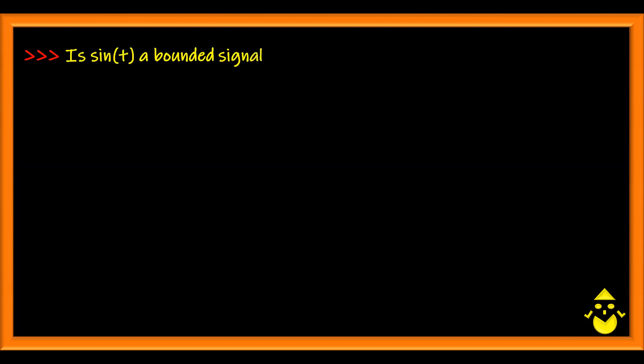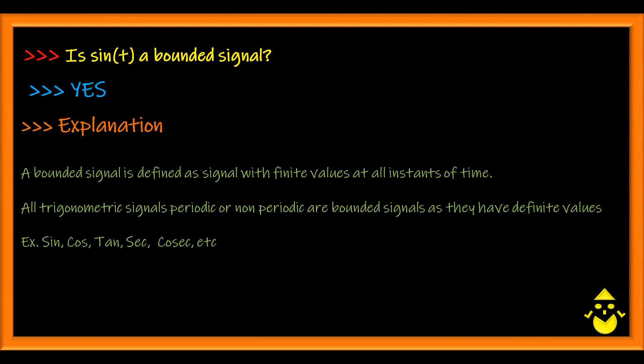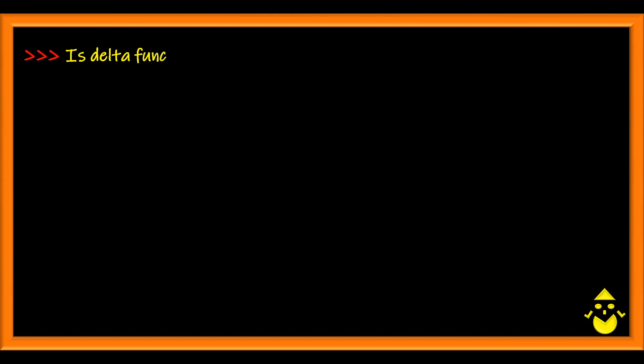Is sine t a bounded signal? Yes. A bounded signal is defined as a signal which has finite values at all instances of time. So all trigonometric signals, periodic or non-periodic, sine t, cosine t, sine 2 pi t, cosine 2 pi t, all are considered as bounded signals. Is delta function a bounded signal or function?